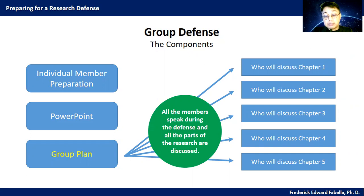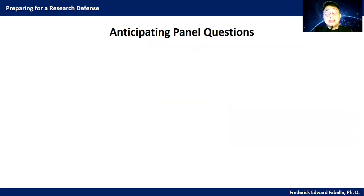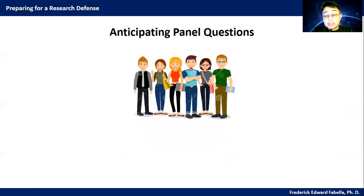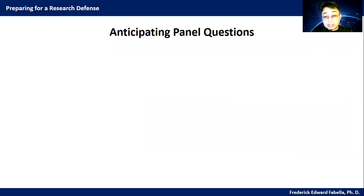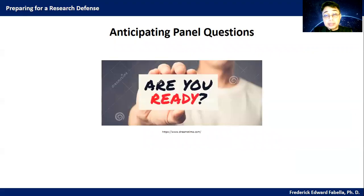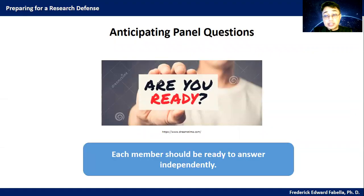You don't have to discuss everything because the panelists will have a copy of your entire research. Anticipating panel questions is one good way of preparing for a research defense, but you have to consider your group. The panelists may call a group member by name and ask a question — it could be any one of you. Therefore, each member should be ready to answer independently.